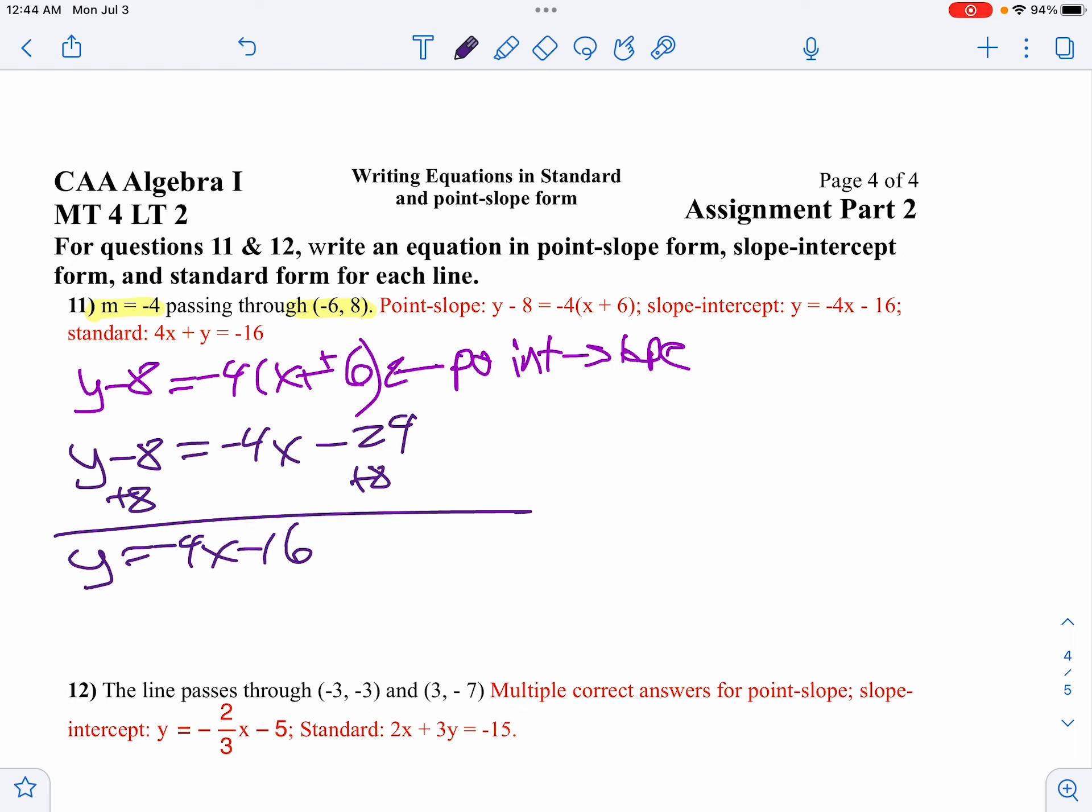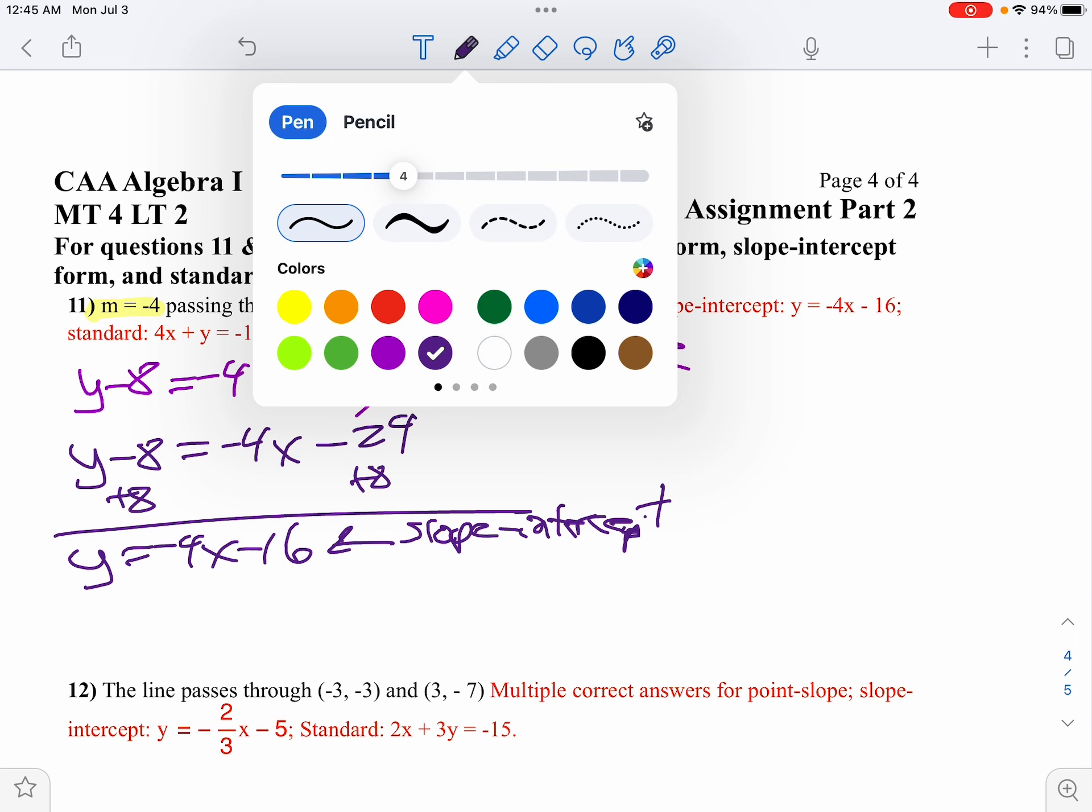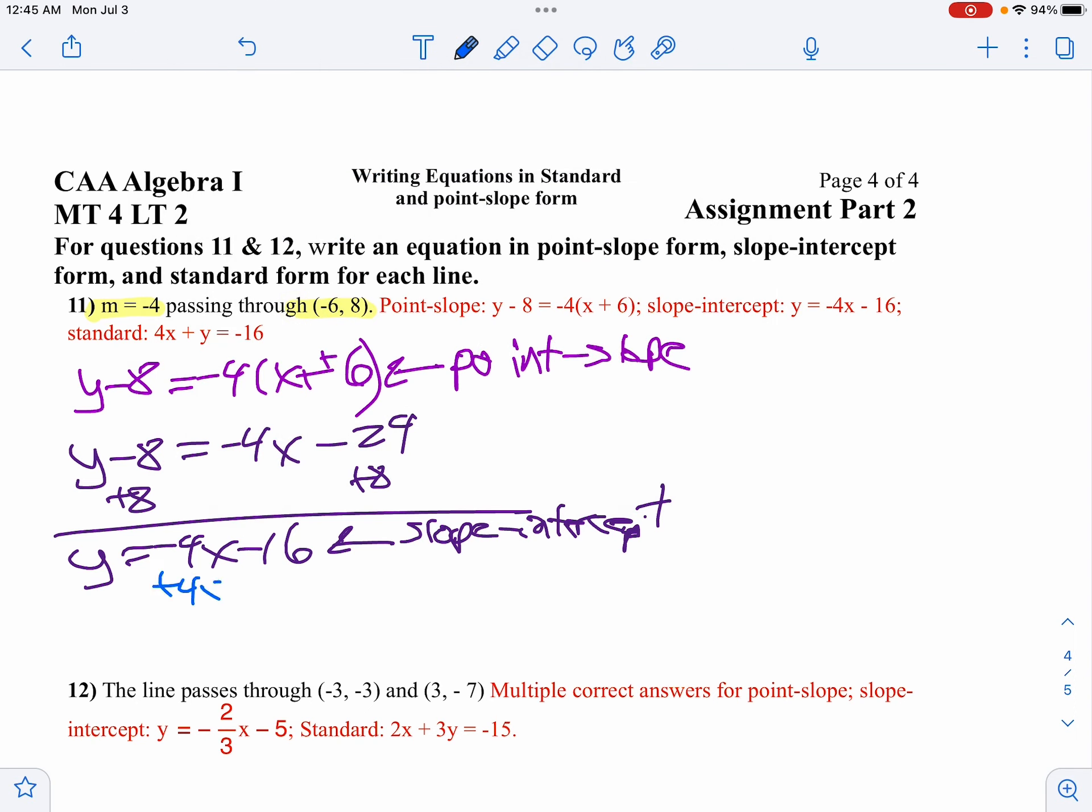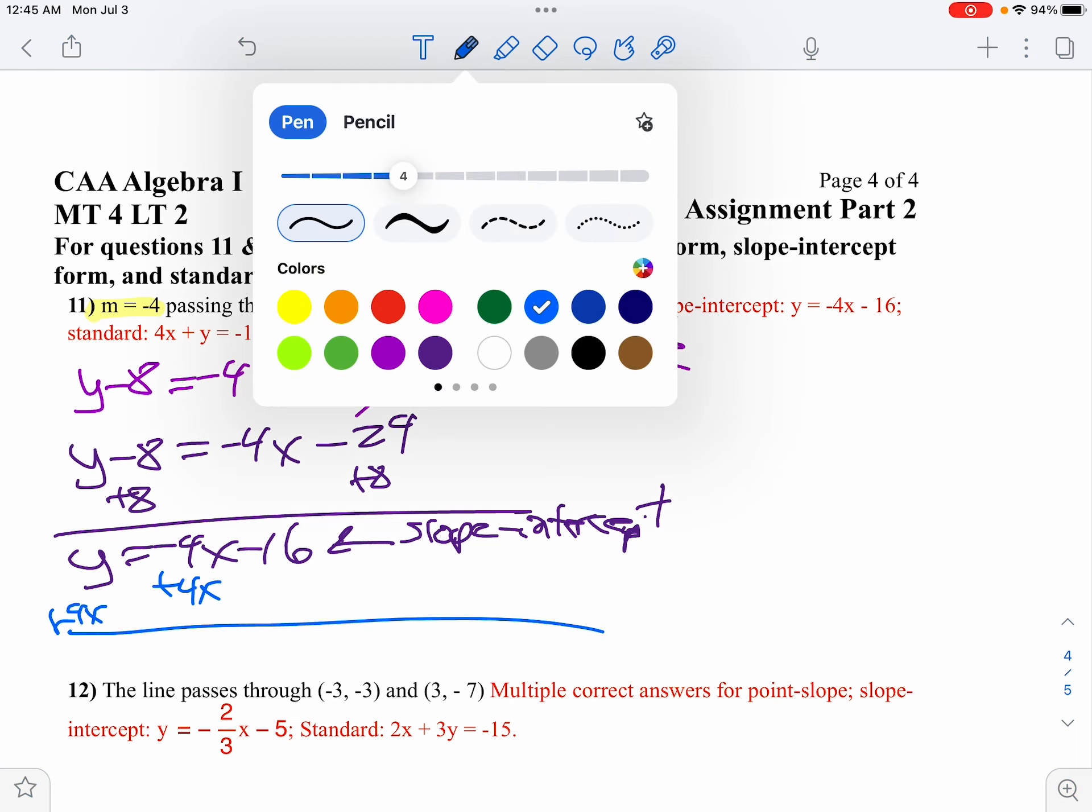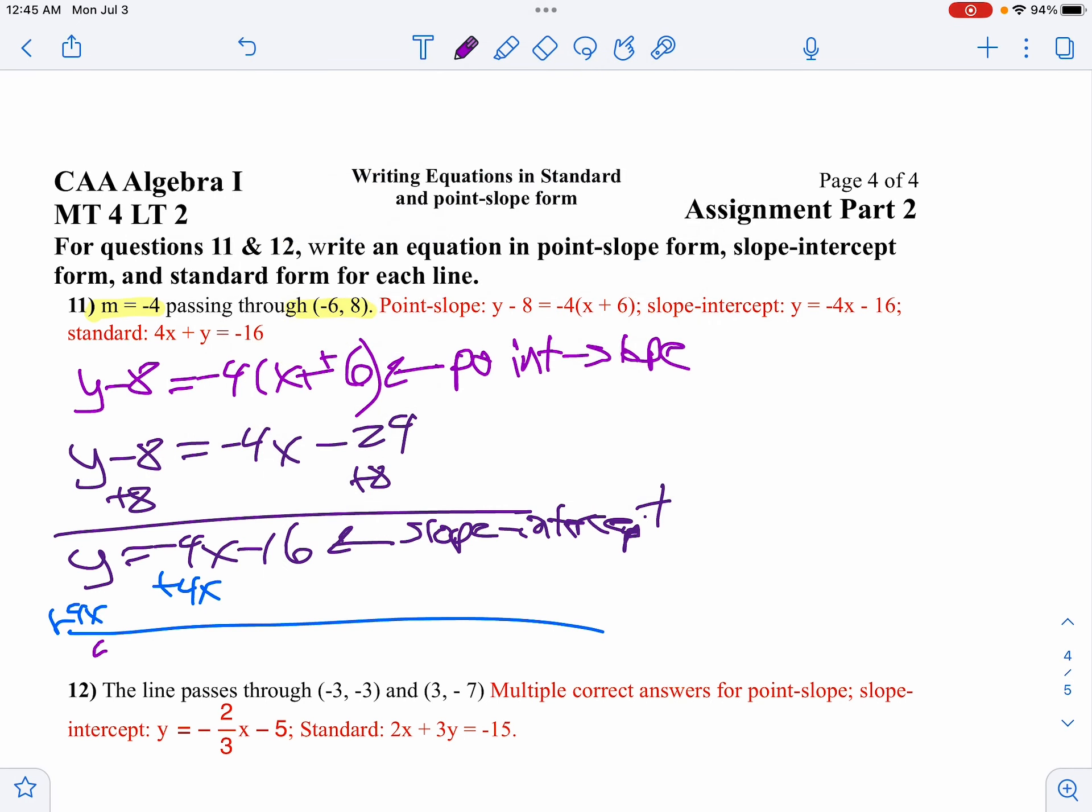And then to put it in standard form, let's write that in slope-intercept form. We'll just get the x on the other side, so let's add 4x to both sides. So standard form is going to look like 4x plus y equals negative 16. And there's your answer in standard form.